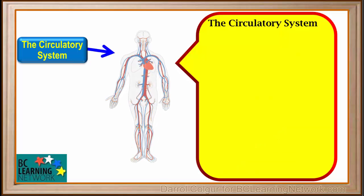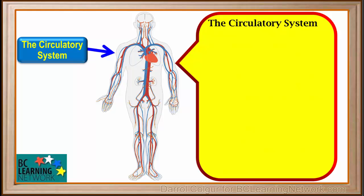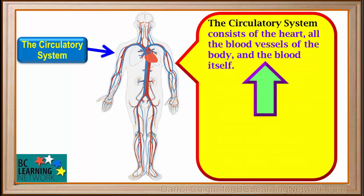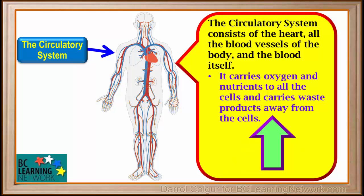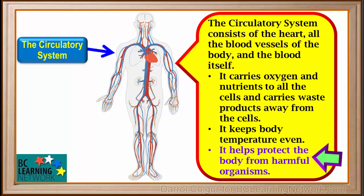The circulatory system consists of the heart, all the blood vessels of the body, and the blood itself. Its functions are to carry oxygen and nutrients to all the cells and carry waste products away from our cells, to keep our body temperature even throughout, and to help protect our body from harmful organisms.